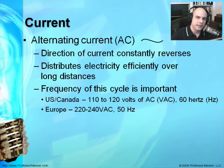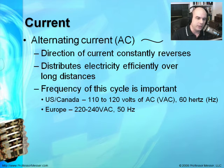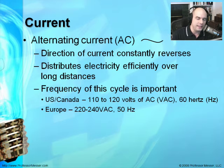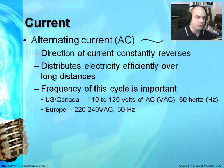Let's talk a little bit about current. In the United States, when you plug into a wall outlet, you're plugging into alternating current, or AC. The direction of this current is constantly reversing, which is why we call it alternating current. This is a very efficient way to distribute electricity. Computers use DC to operate, and you may wonder why we can't just come out of the wall with DC. That's because AC is very easy to distribute over large distances, which is important for places like the United States.